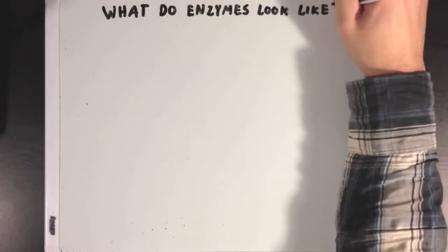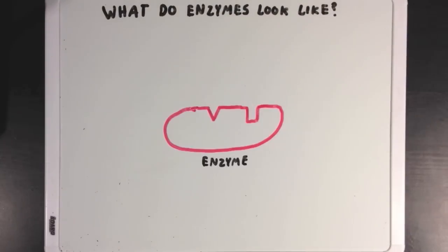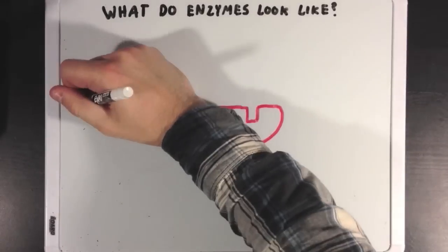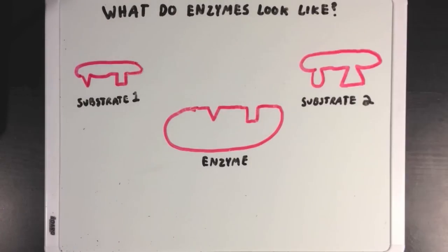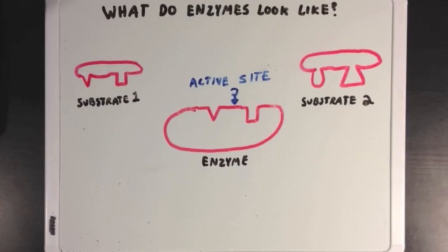What do enzymes look like? Well, most enzymes are proteins, or at least partially made up of protein. Substrates are any molecule that an enzyme will act on — often these are the reactants that the enzyme will ultimately help turn into products. Enzymes also have what is called the active site, which is the location on the enzyme where substrates bind and where the reaction ultimately happens. Every enzyme has a unique active site that will only bind to certain substrates.